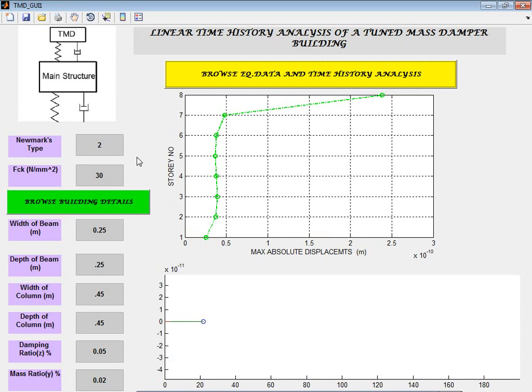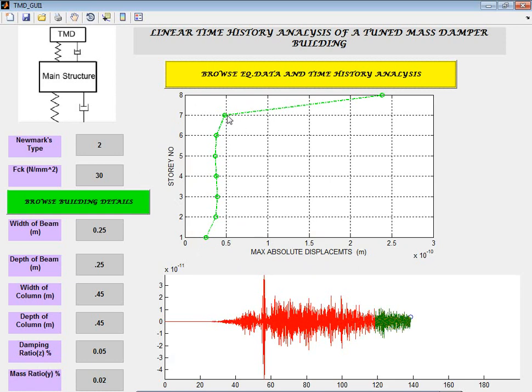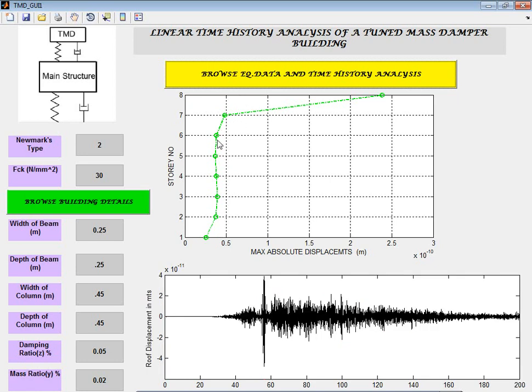You can get the graph here. You can see this is absolute maximum displacement on the x-axis and story number on the y-axis. The eighth is the tuned mass damper response displacement. You can see the displacements are increasing - first floor less, second floor somewhat more, and so on.